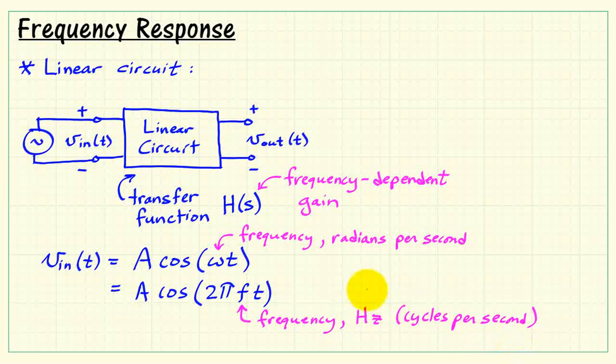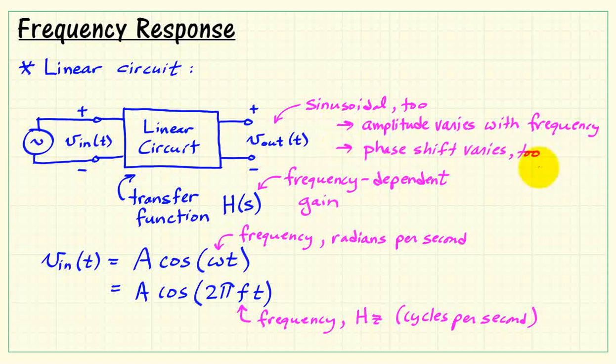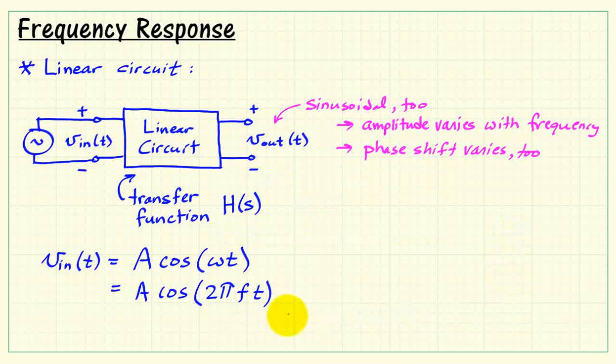The idea is we apply a sinusoidal input to the linear circuit. Well if the circuit is linear, then the output is sinusoidal as well. The only thing that changes is the amplitude will vary with frequency, and the relative phase of the output sinusoid will vary as well.